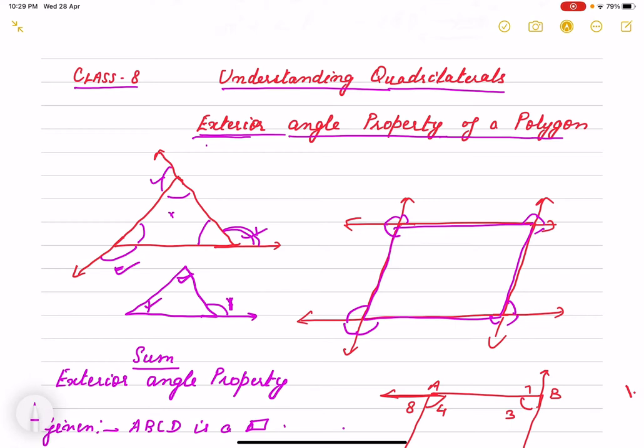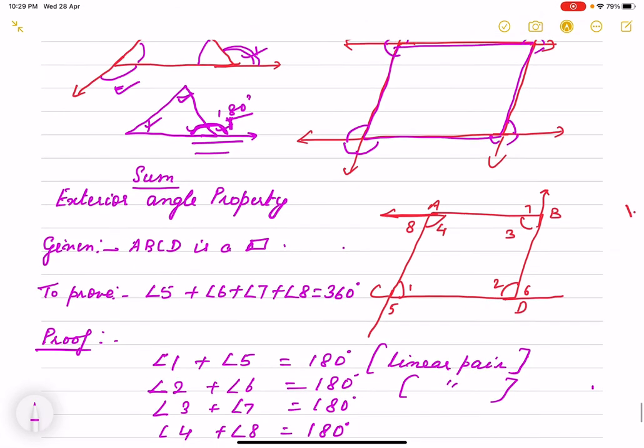One more thing we have done that is linear pair. That if you add these two angles, sum is 180 degree. And these two are called linear pair of each other. So we are going to use this in exterior angle property.